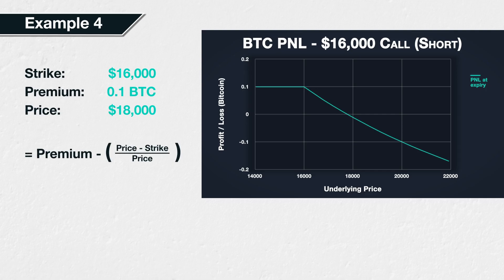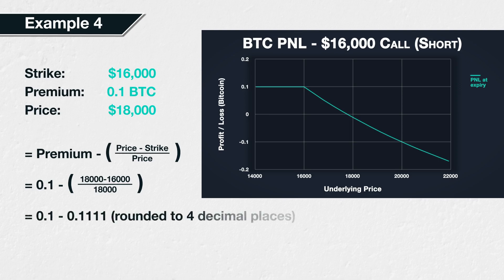Using the seller formula: option premium minus (Bitcoin price minus strike price) divided by Bitcoin price. This equals 0.1 − (18,000 − 16,000) / 18,000 = 0.1 − 0.1111 (rounded to four decimal places) = negative 0.0111. The short call position therefore made a loss of 0.0111 BTC.